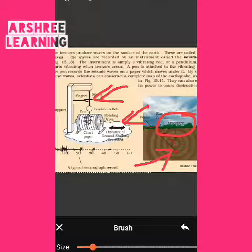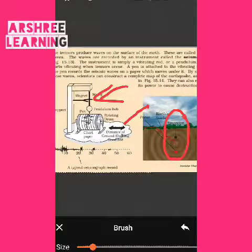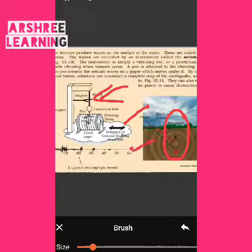The place where the vibrations start is called the focus, and from there the vibrations travel in different directions. The place situated directly above the focus is called the epicenter, where the intensity of the earthquake is highest. Places farther away from the epicenter experience lesser intensity because they are farther from the source.